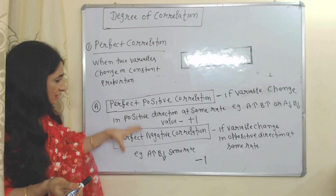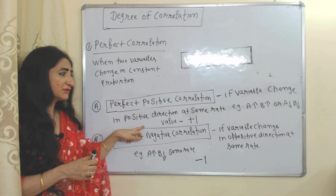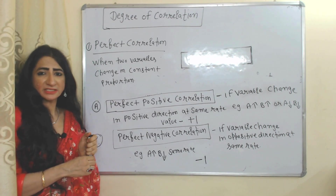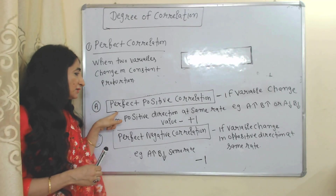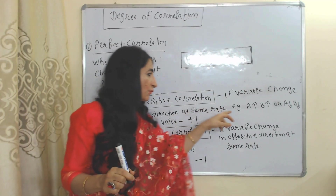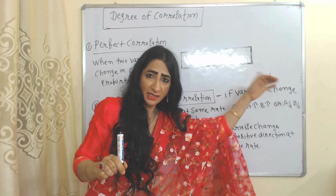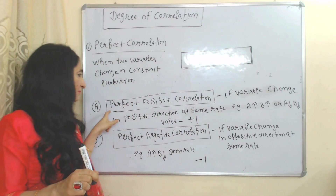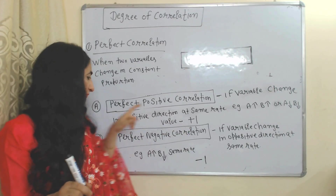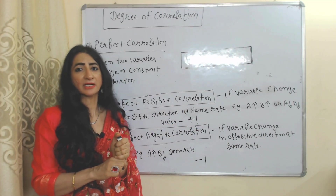Perfect correlation is further divided into two parts. Perfect positive correlation: if variables change in the positive direction at the same rate, it is called perfect positive correlation. For example, if one variable increases then the other also increases at the same rate, and its value is always equal to plus one.